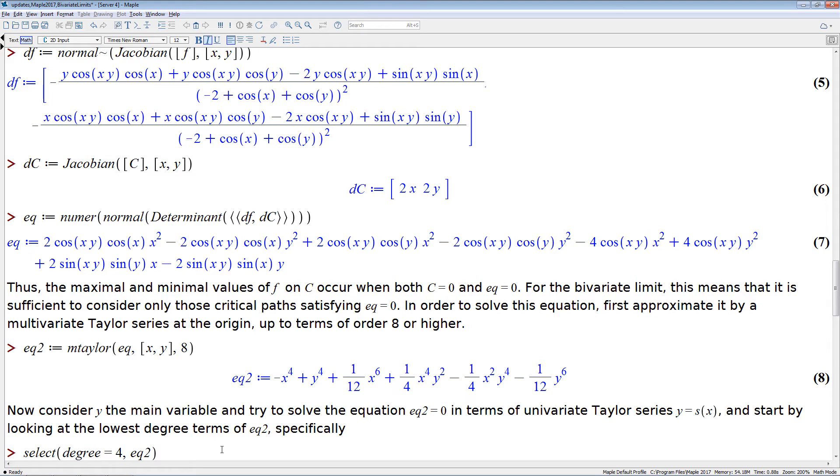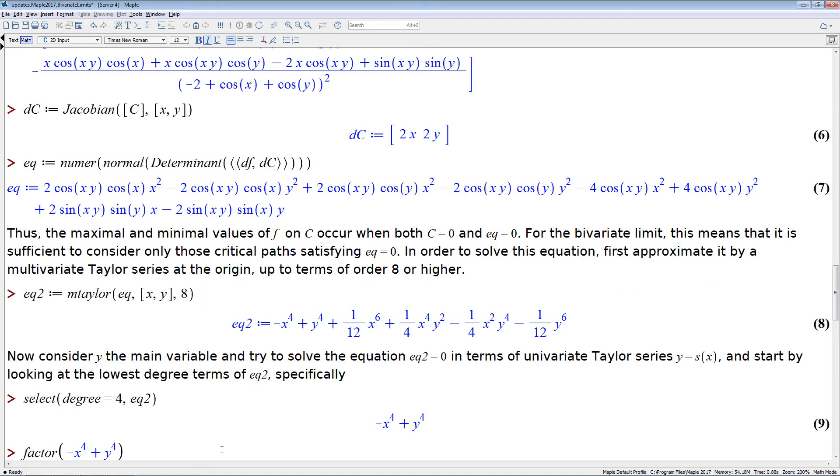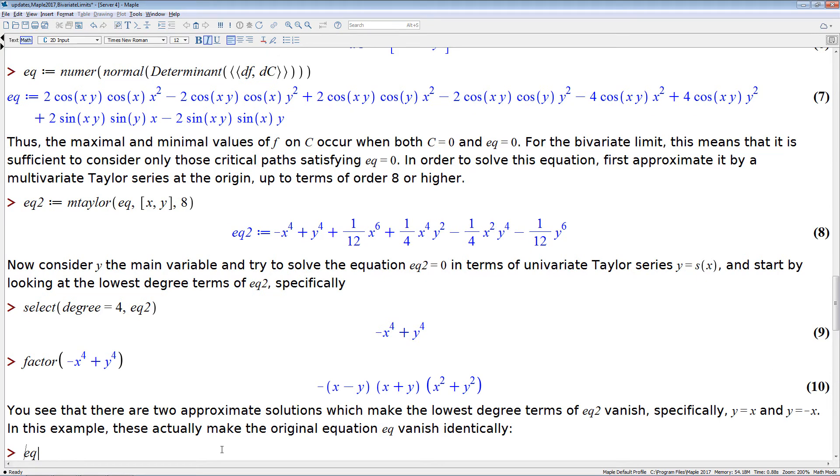The first thing we do is we look at the low degree parts of this equation. So the lowest degree that appears here is degree 4. So we select the terms of degree 4. And then we try to find all solutions of this part, again, of this approximation. And so we can clearly see here there is, it's a degree 4 polynomial, so it has 4 solutions in total. Two of them are real, namely the solution y equals x and the solution y equals minus x.